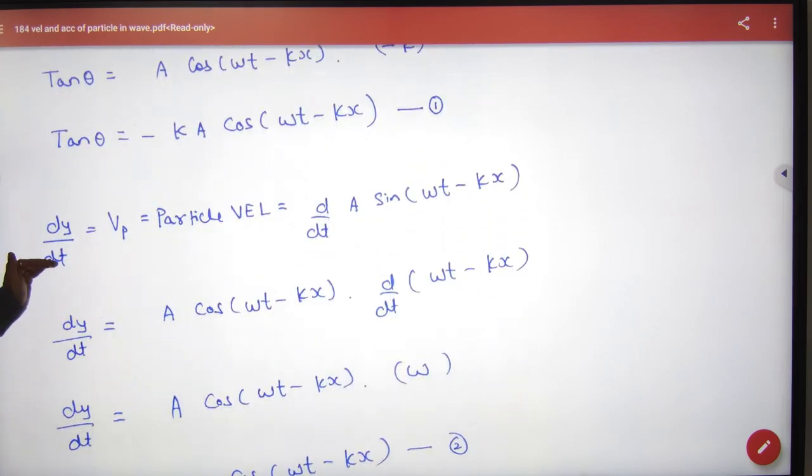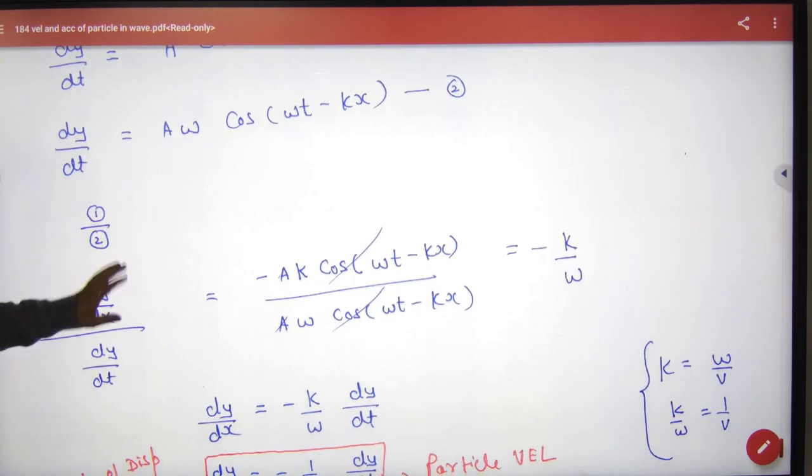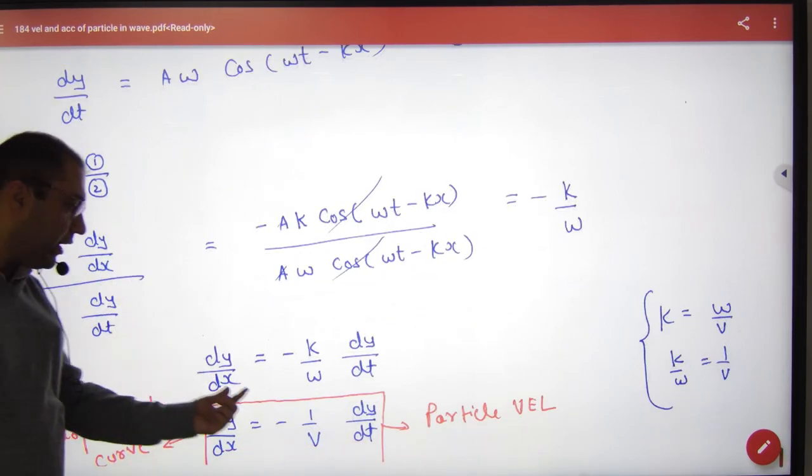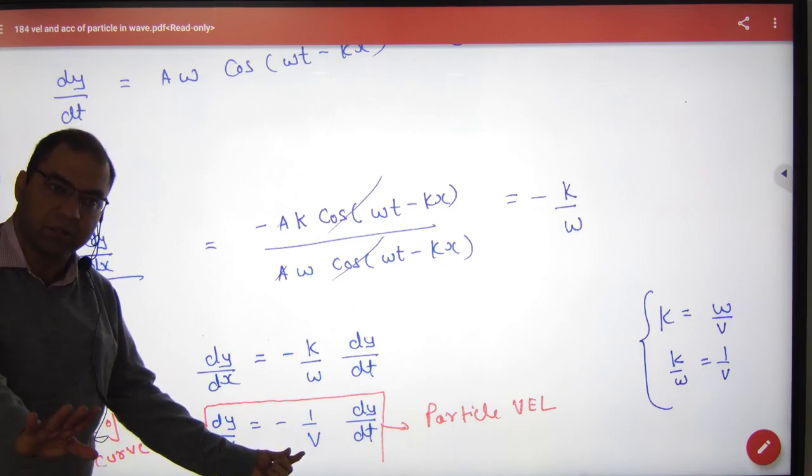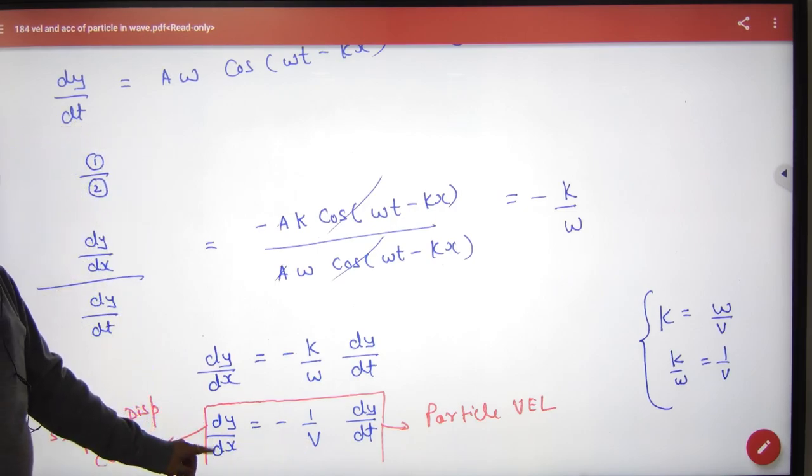Then why do you differentiate it with respect to t? What will the particle velocity be? So velocity simultaneously solved: dy by dx, dy by dt. So this formula you have to remember. What is the formula? Listen to this.